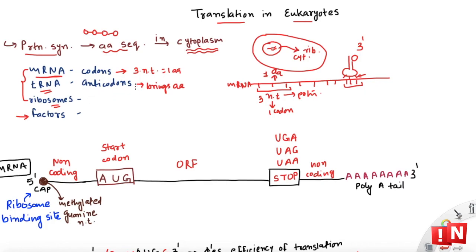All this happens on ribosomes. In eukaryotes we have the 80S ribosome with two subunits — large and small, 40S and 60S. Different factors come into picture at each stage: eukaryotic initiation factors (eIF), eukaryotic elongation factors (eEF), and eukaryotic release factors (eRF).